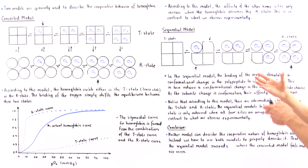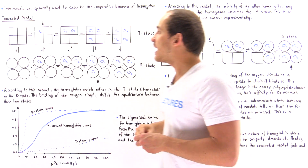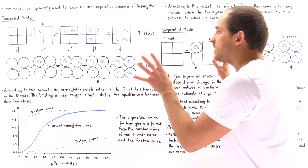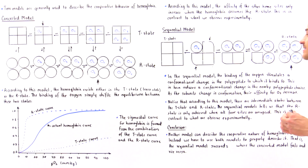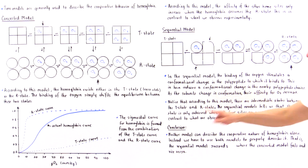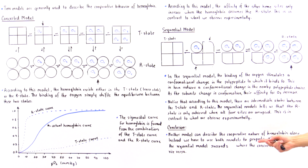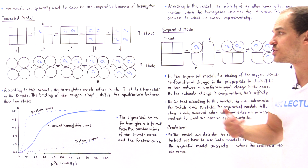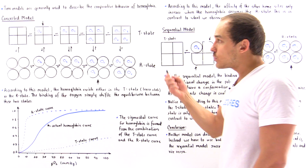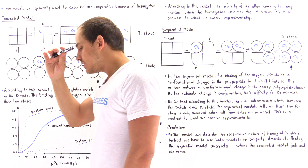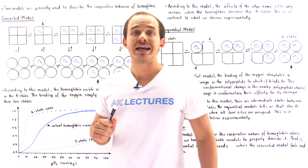In conclusion, neither model alone can describe the cooperative nature of hemoglobin. Instead, we have to combine these two models to correctly describe the mechanism by which hemoglobin binds oxygen. The sequential model succeeds where the concerted model fails, and vice versa — together they describe the way hemoglobin binds oxygen in a cooperative fashion.